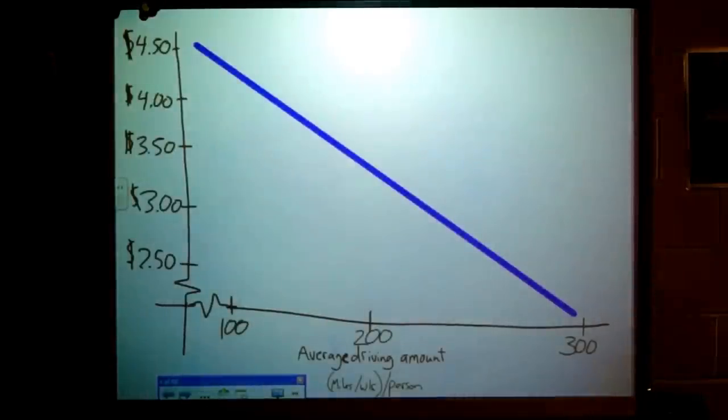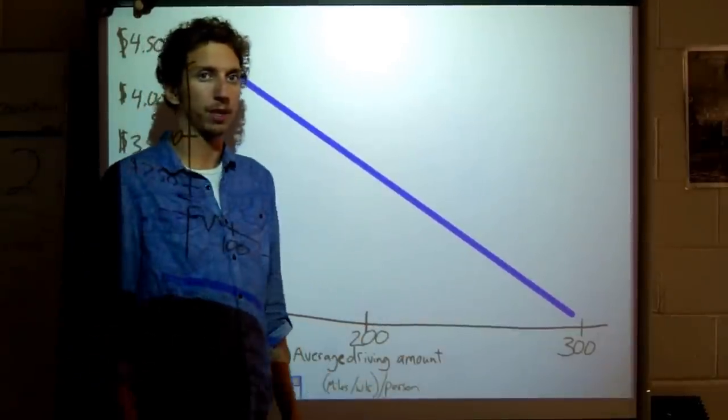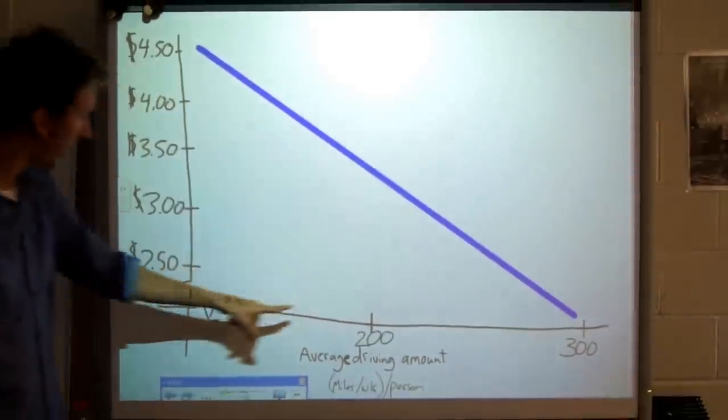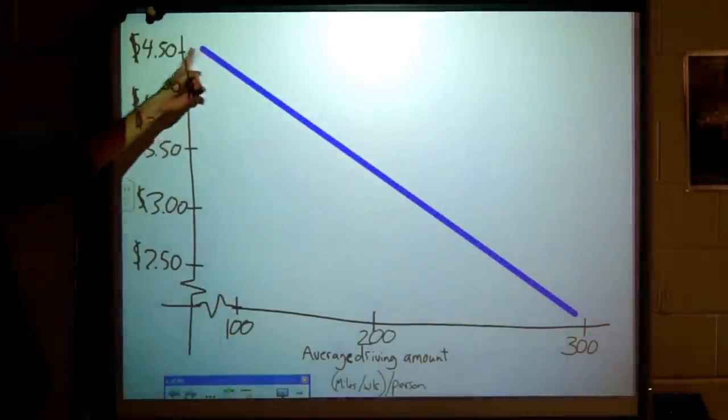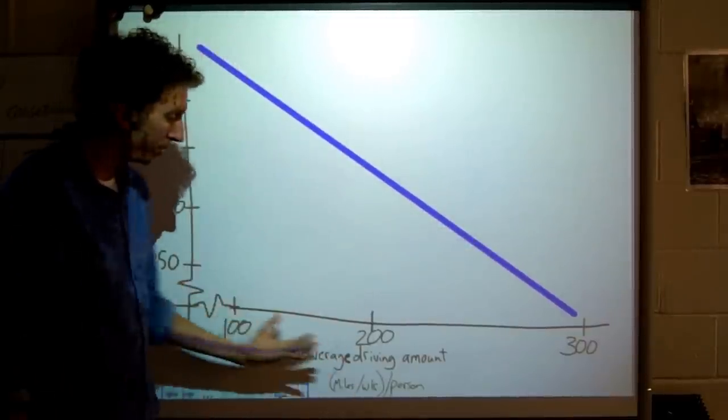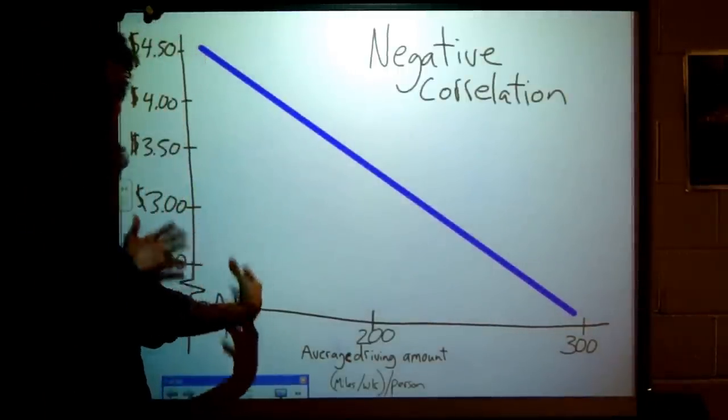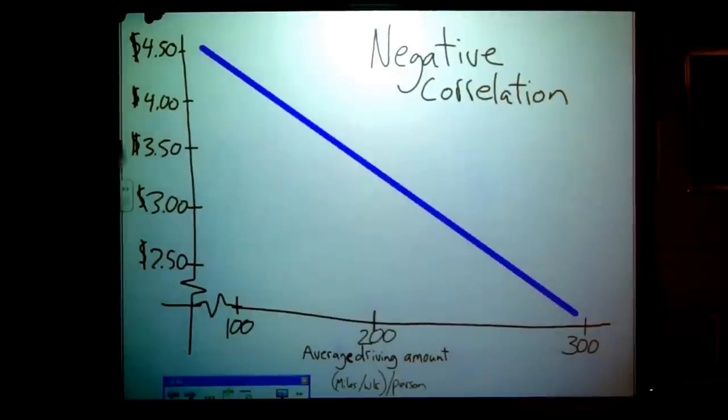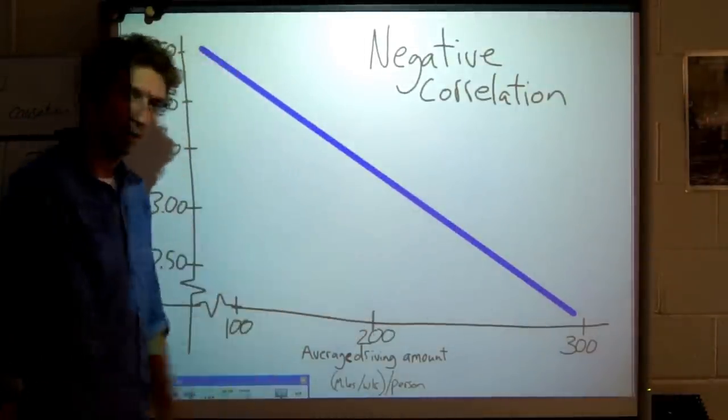So, first things first, we're going to look at a correlation. Here is a correlation between gas prices over here and the average driving amount that a person does in a week. Let's say that a person, on average, will drive 300 miles per week if gas is 250-ish, and they'll drive lots less, 100 miles per week when gas is 450. The correlation is the connection between that data and that data. This would be called a negative correlation. When one increases, when one set of data increases, the other set of data decreases.